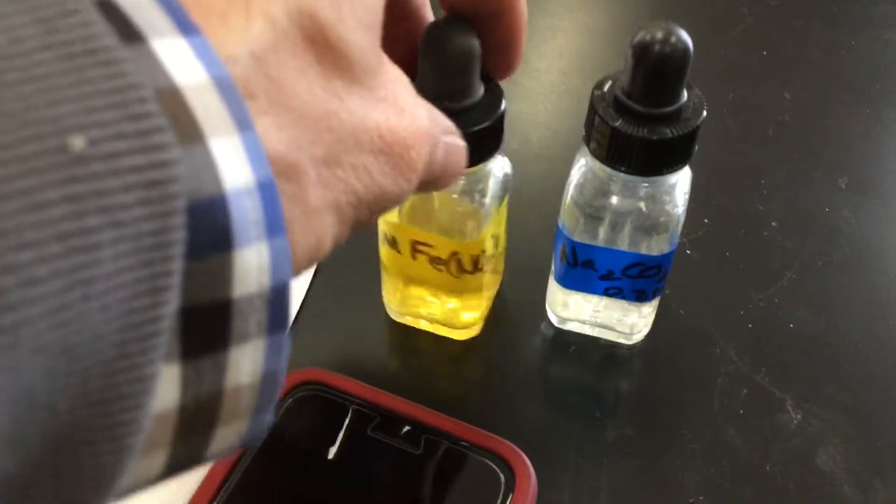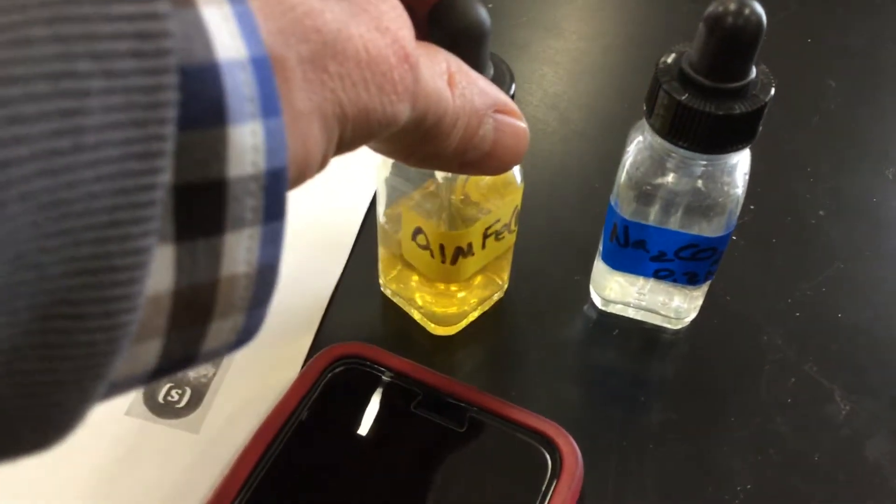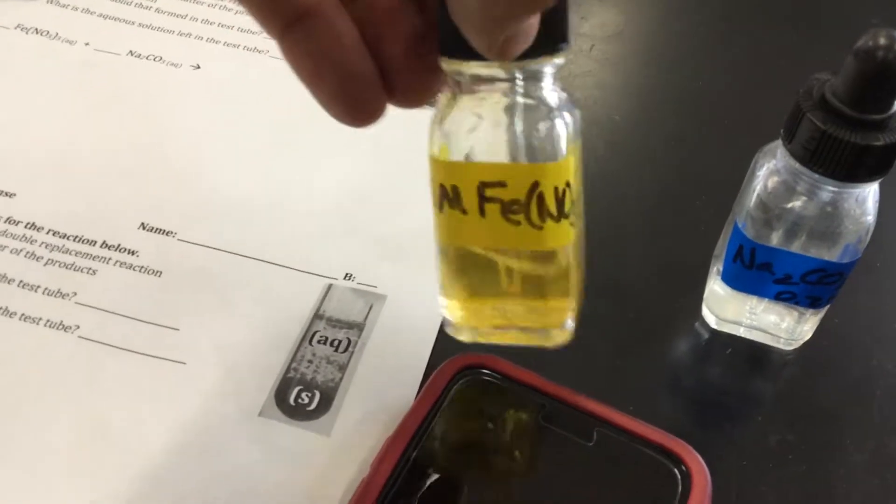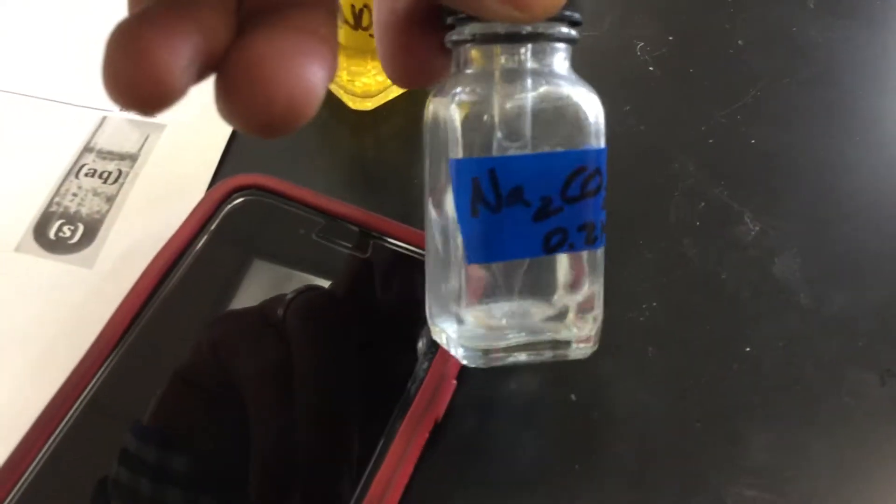So the chemicals that we have here today, let me turn these around so you can see them. We have some iron nitrate and you should know now that 0.1m stands for 0.1 molar. That's how concentrated it is. And then this chemical here, we have sodium carbonate. This you'll see is 0.2 molar. Now for your purposes, the molarity doesn't really matter, but I'm just going to mix some of those inside a test tube.